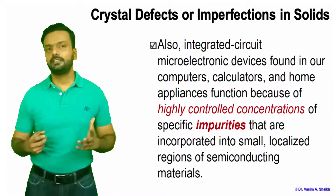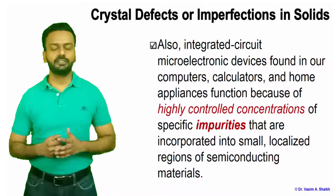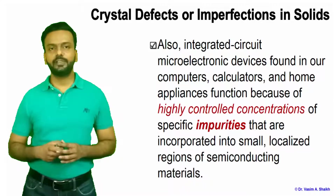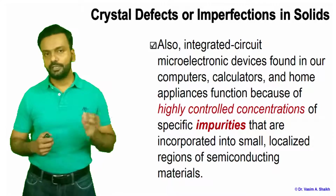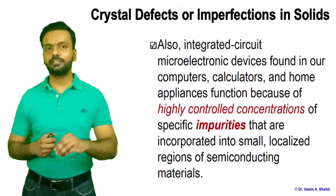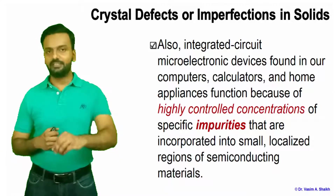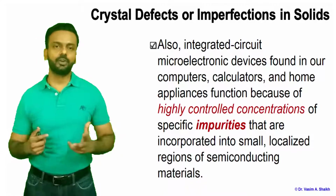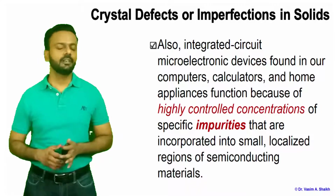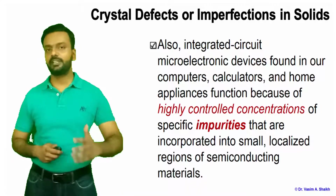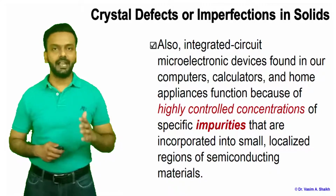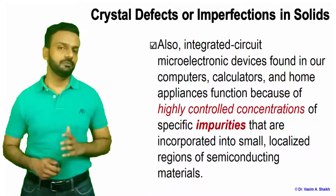We can also see ICs used in computers, calculators, and home appliances, where we put highly controlled impurities at a certain concentration, and that makes the material a semiconducting material with useful properties. This is called doping — we are adding impurity atoms to get certain benefits from the material, which is again nothing but adding imperfections to the material.